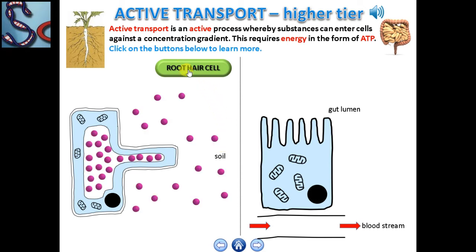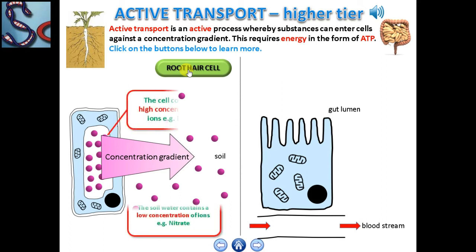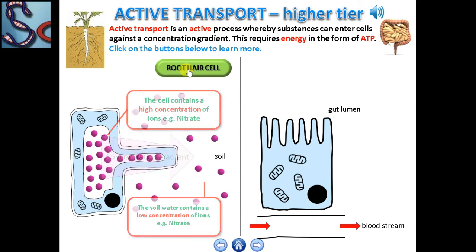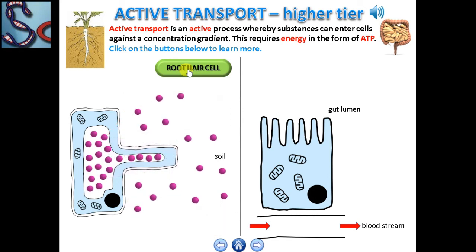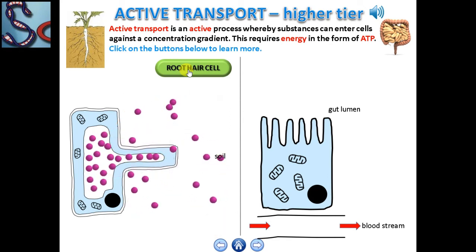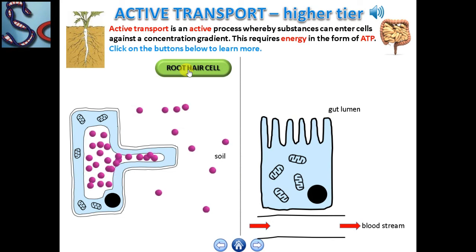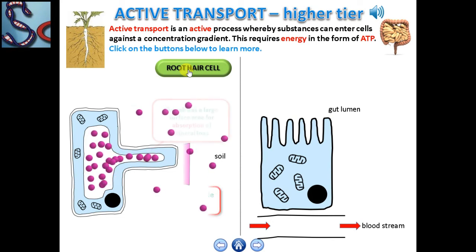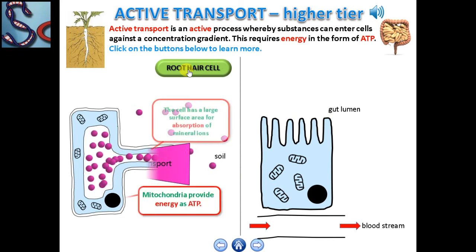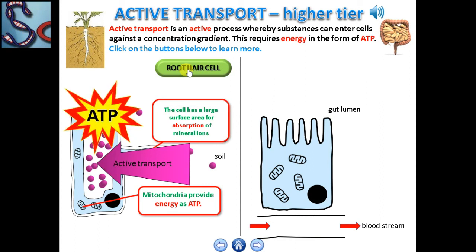In this example of a plant's root hair cell, the concentration gradient for nitrate ions goes from high inside the cell to low outside the cell. However, the plant needs more nitrate ions and will therefore need to transport these ions into the cell against the concentration gradient. This process is active, so these cells should have many mitochondria to supply the energy needed in the form of ATP.